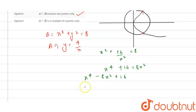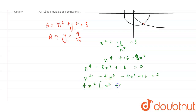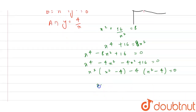Rearranging: x⁴ - 8x² + 16 = 0. We can factor this as x⁴ - 4x² - 4x² + 16 = 0, taking x² common from the first pair and -4 common from the second pair, giving (x² - 4)(x² - 4) = 0, so (x² - 4)² = 0.